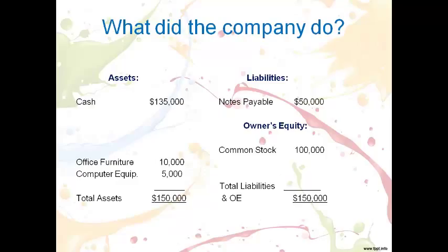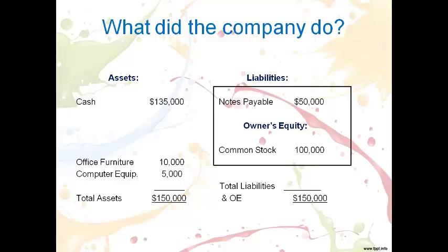Let's take a different approach and look at a balance sheet and identify the transactions that have occurred to date. Start on the right side, since the right side tells you where the company got their funds for the left side. The notes payable indicates the company borrowed $50,000 from the bank, and the common stock indicates that the company received $100,000 from investors — cash was initially increased by $150,000. The company then took $15,000 and purchased $10,000 of equipment and $5,000 of computer equipment. The company has $150,000 in assets, owes $50,000, and owns $100,000 of it. The balance sheet stays in balance as these transactions occur.